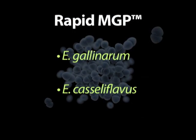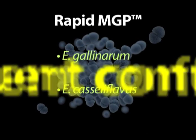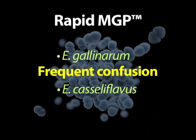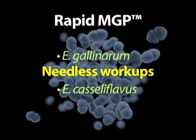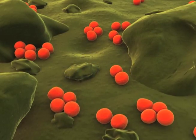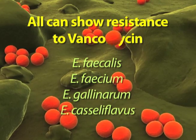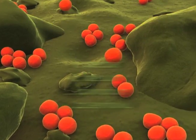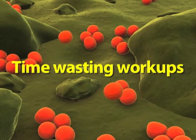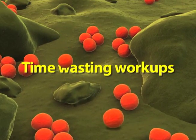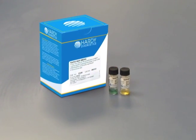Gallinarum and casseliflavus are intrinsically resistant to vancomycin, which is why they can frequently cause confusion and a needless workup if they are misidentified as faecalis or faecium. This is especially important since all four of these organisms can express resistance to vancomycin. Since we don't want to initiate needless patient therapy and waste time working up non-pathogenic species, it is very important to differentiate the various species of enterococcus.